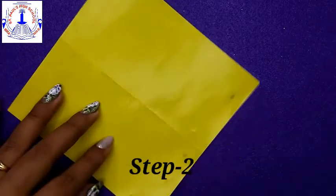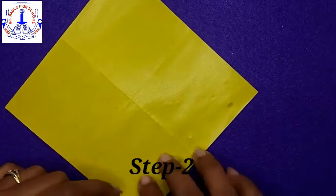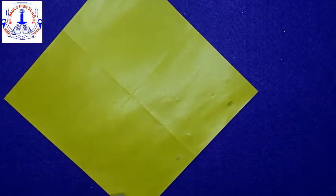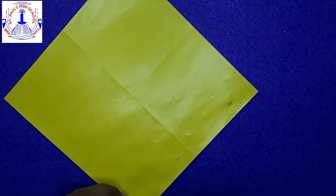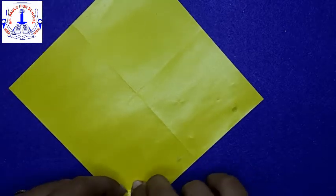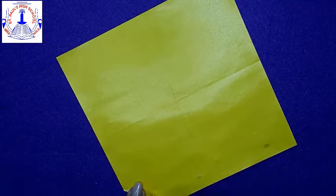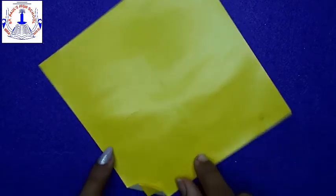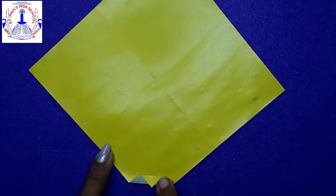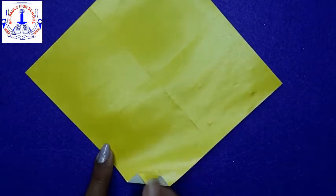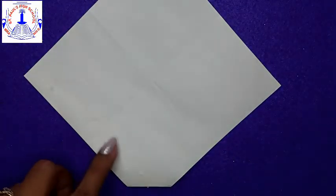Step two. Now see, you're going to fold it this way. Now, same way, again fold this flap upwards. See, this way. Done. Again, flip your paper towards the other side.